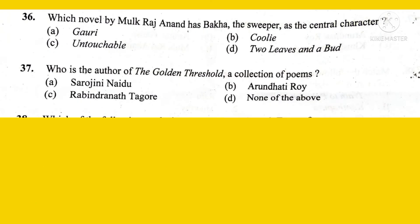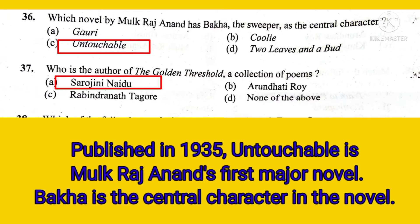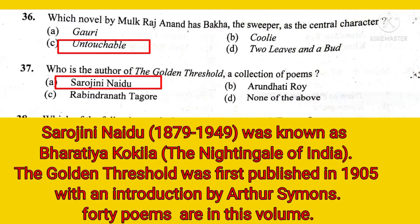Which novel by Mulk Raj Anand has Bakha the Sweeper as a central character? The right option is Untouchable. Who is the author of The Golden Threshold, a collection of poems? The right answer is Sarojini Naidu. Untouchable is Mulk Raj Anand's first major novel, published in 1935, and Bakha is the central character. Sarojini Naidu was known as Bharat Kokila, the Nightingale of India. The Golden Threshold was first published in 1905 with an introduction by Arthur Symons, and it contains around 40 poems.